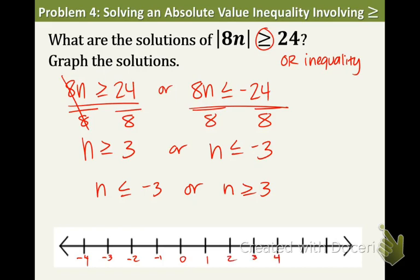Open or closed circles? Well, they're actually closed circles because of the line underneath the symbol. So closed circle right here and we're shading to the left all the numbers that are smaller than negative 3. And we're going to positive 3, closed circle and shading to the right. So as you can see, they're going in opposite directions. Or inequalities go their separate ways.